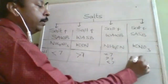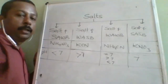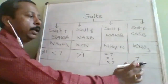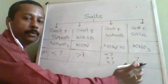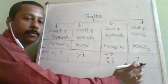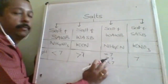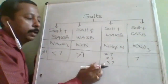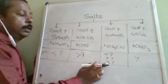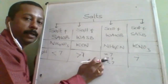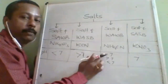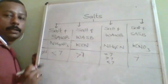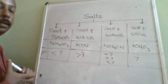For salt of strong acid and strong base, pH is always 7 — it does not even undergo hydrolysis. For example, NaCl: no matter how much water you add, pH = 7. Summary: SA+WB → pH < 7 (acid dominating); WA+SB → pH > 7 (base dominating); SA+SB → always pH = 7.